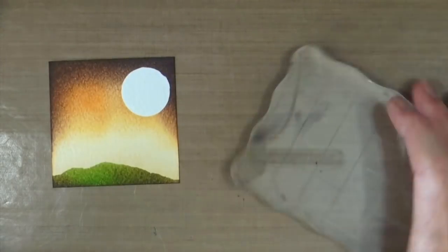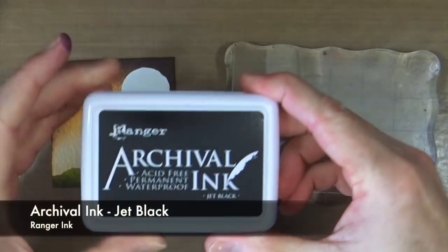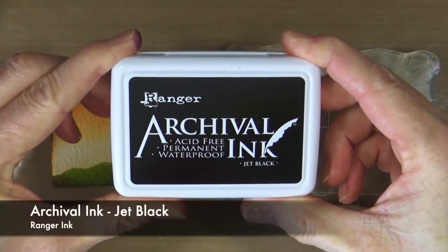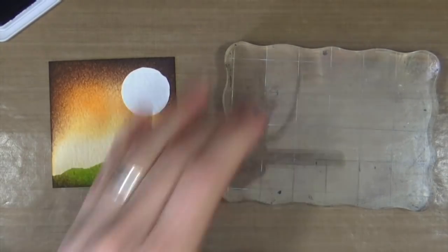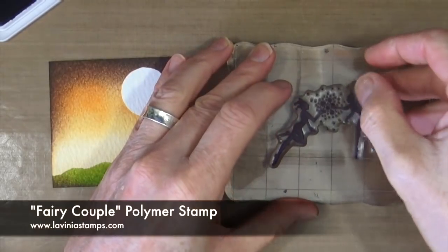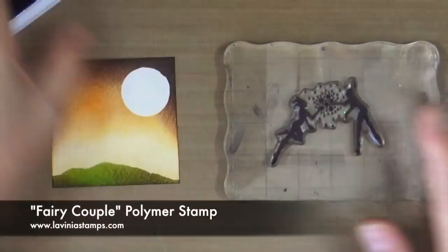I'm going to do a little bit of stamping now, so I've got my acrylic block out and my jet black archival ink. The stamp I'm going to use is an old one from my stash from a company based in the UK called Lavinia Stamps. This is a photopolymer stamp called the Fairy Couple.